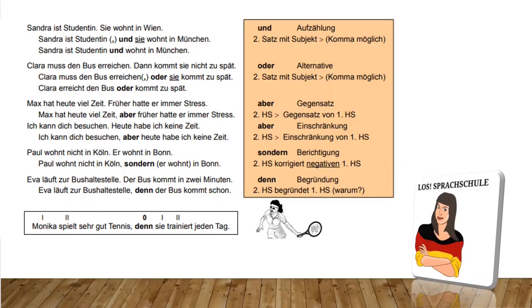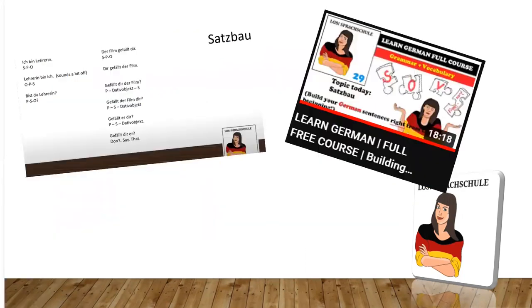So today we have the last topic, which is how to connect two sentences. I will talk about it in a second. If you're not familiar with the normal structure of a sentence — with the subject, the verb, the object, and in what order the time information and local information should be — you can watch my videos, for example the sentence building video, but I also have more information on my channel. You can check out the different topics there and then come back and keep watching.